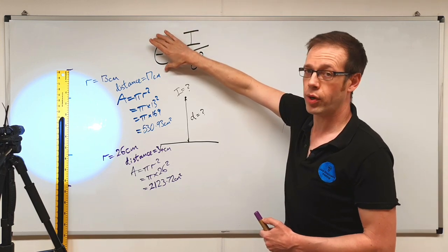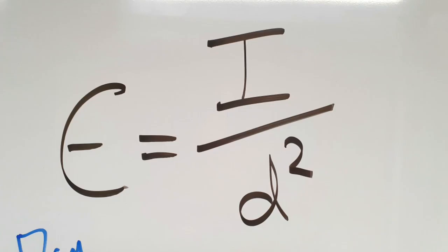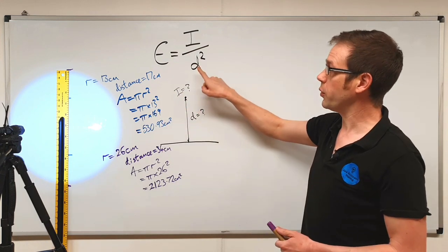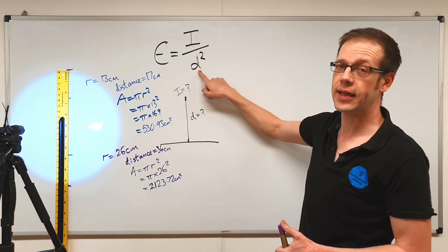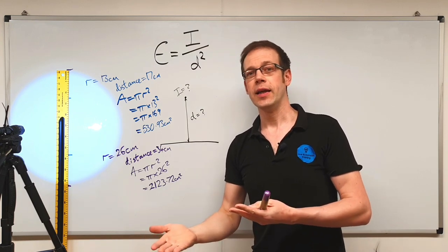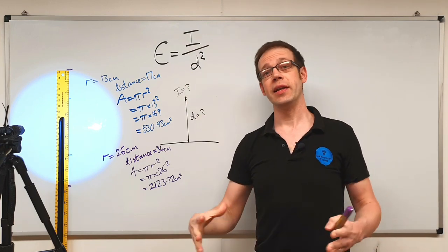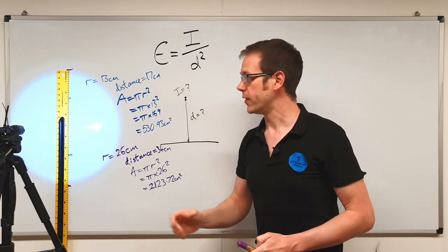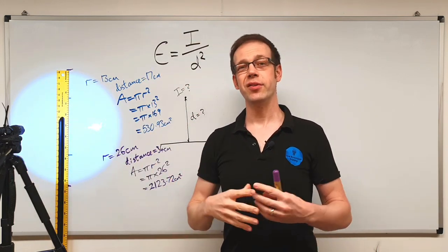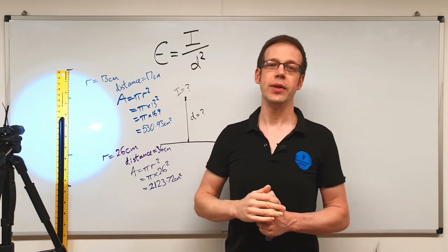You double how bright the light source is, you double how brightly lit the surface is. But if you double how far away the light is from the surface, we don't just halve the value — we actually quarter it. That logic continues to apply: if we triple the distance, the illuminance becomes a ninth of its original value; quadruple the distance and you'd only have a sixteenth of the illuminance. The area the light has to cover increases exponentially — by the square of the factor by which the distance increases.